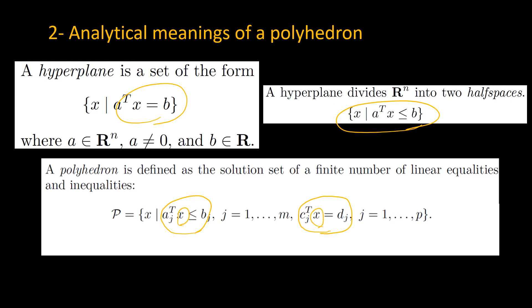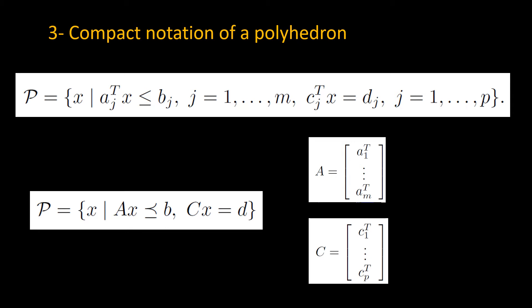Rigorously speaking, a polyhedron is defined as the solution set of a finite number of linear inequalities and equalities. Note that m and p here are finite numbers.